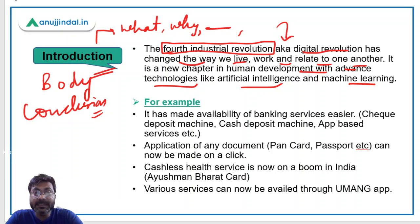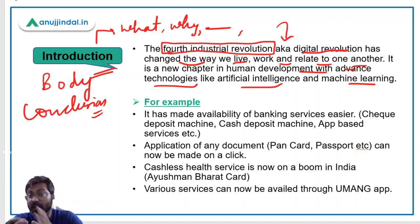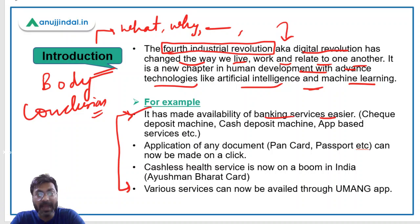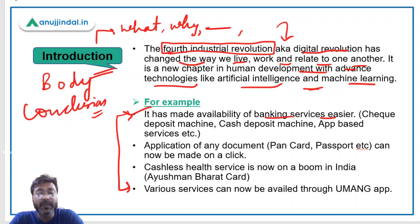In the main answer writing structure, if you are writing any statement then you have to give evidence. If you write that digital revolution is making our lives easy, you have to tell the examiner how it is doing so. We can tell the examiner through examples. Number one: it has made availability of banking services easier. There are a lot of app-based services — you don't need to go to the bank for FDs, investments, PPF accounts, or cash transfers; we can avail all of these through apps. There are also cash deposit machines and e-gallery services at banks.